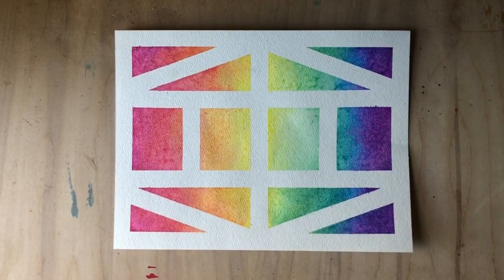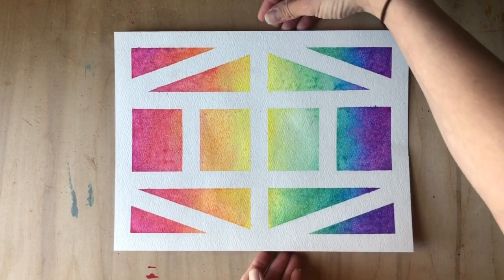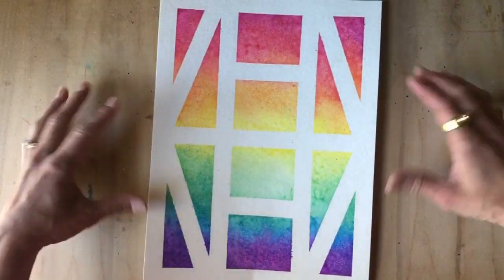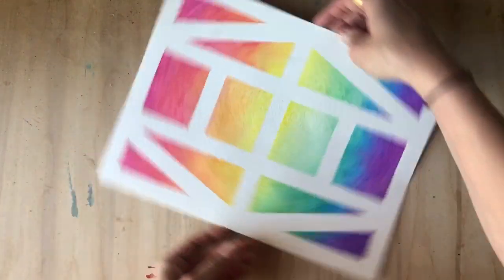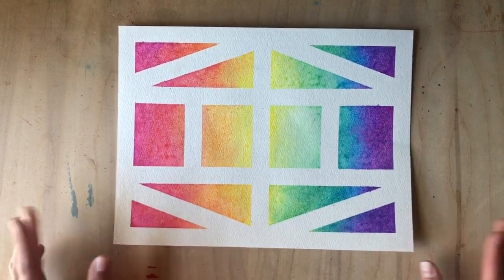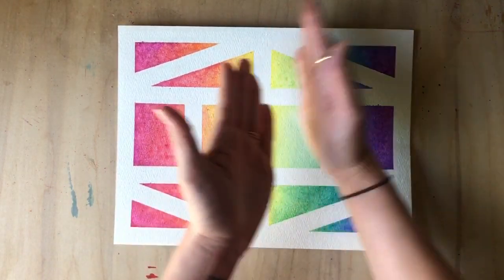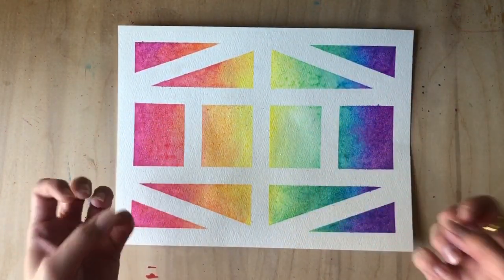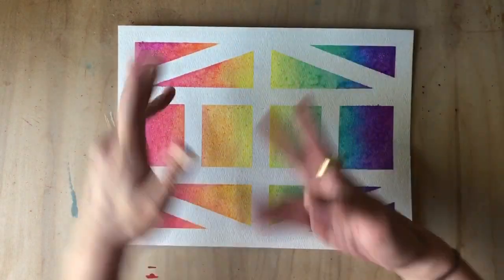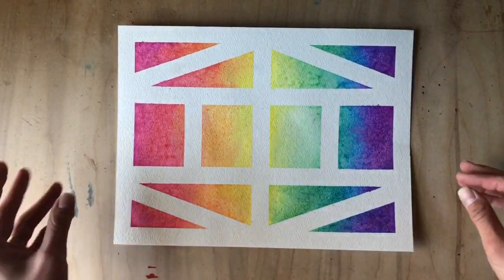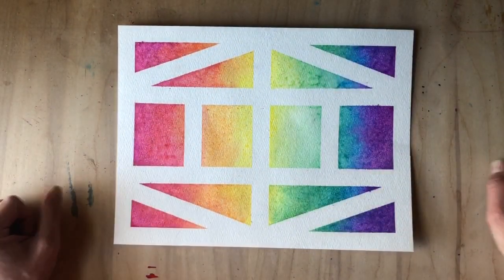And there you have it, my friends - your very own stained glass window. You can hold it this way, you can hold it sideways, any which way you want. Remember, you don't have to have a symmetrical design like this. You can just put that tape down any which way and see what happens. It's pretty cool, and there are no rules.